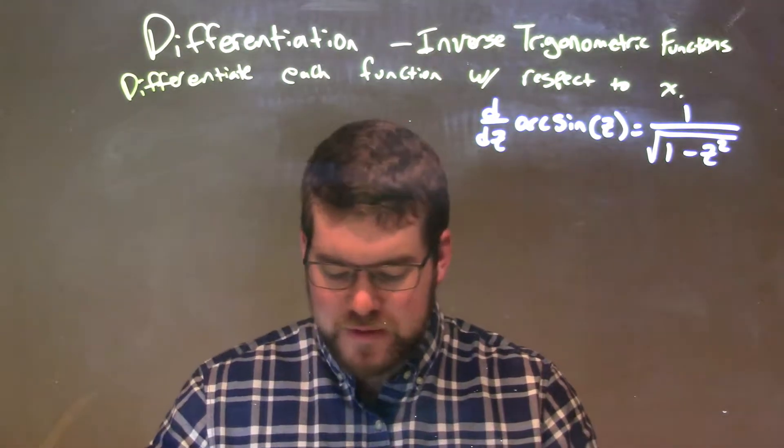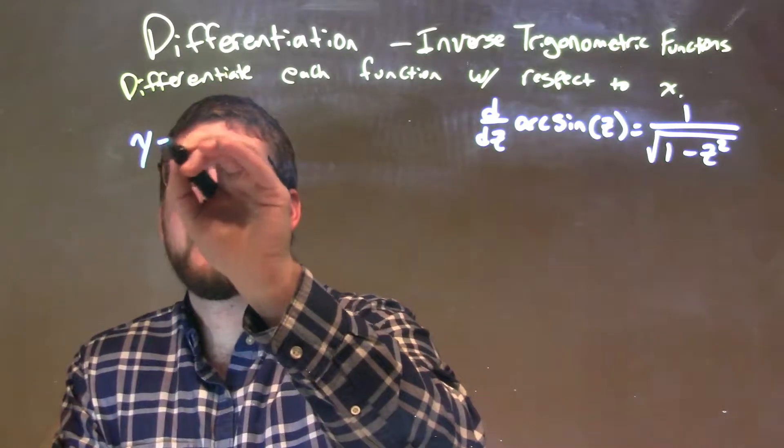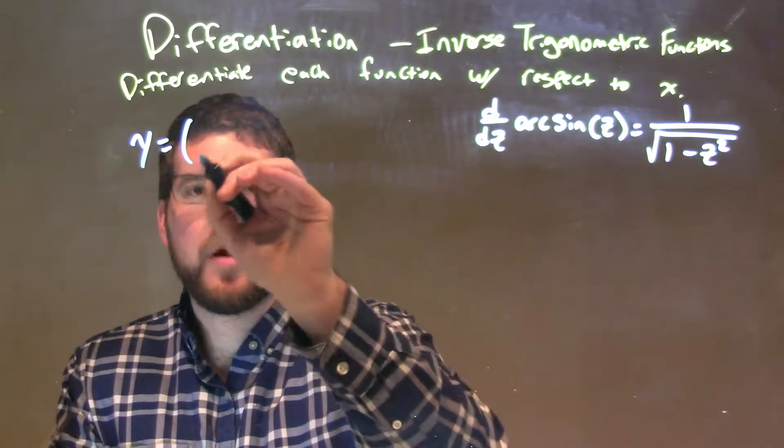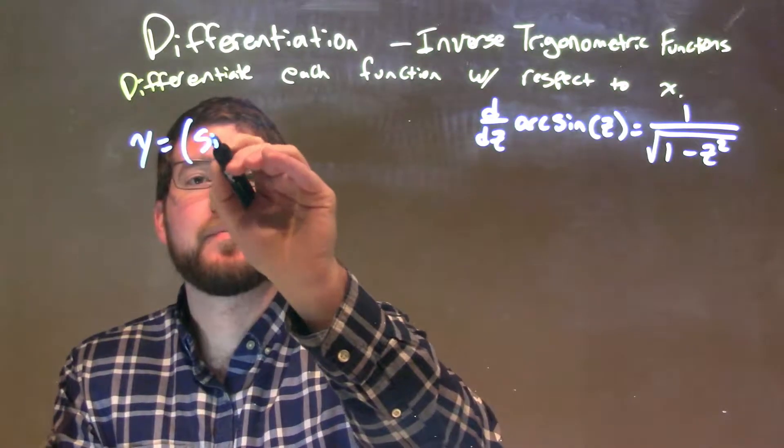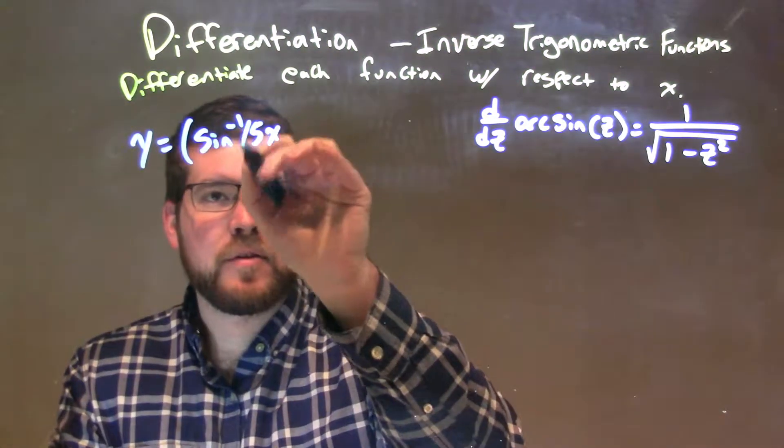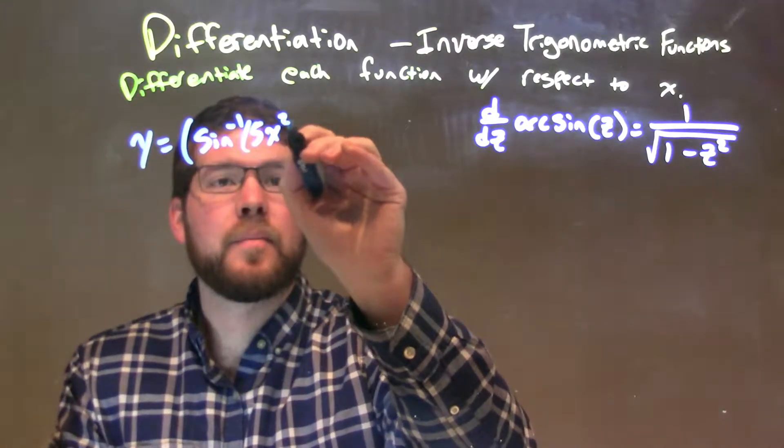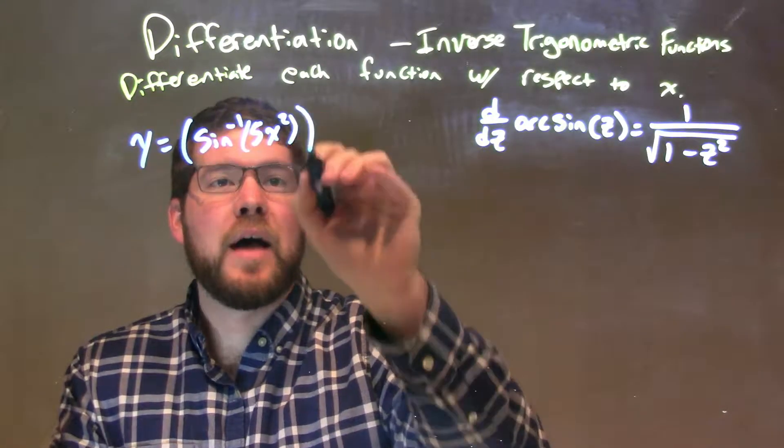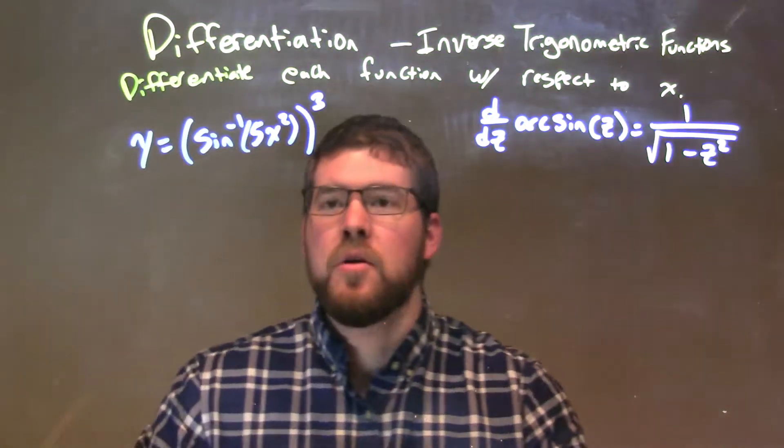So if I was given this function, y equals arc sine of 5x squared, all of that to the three halves.